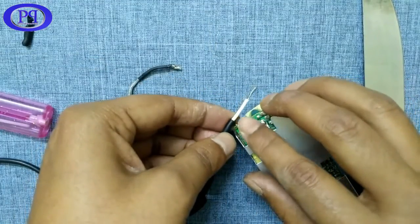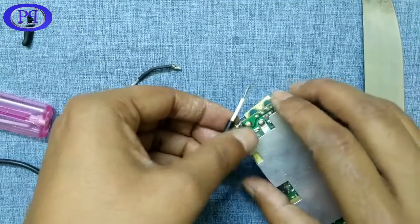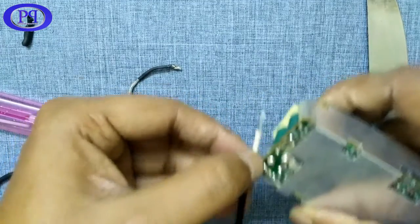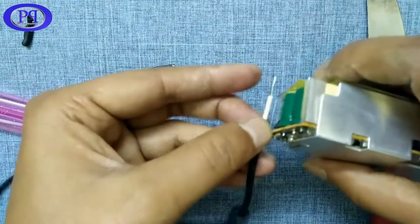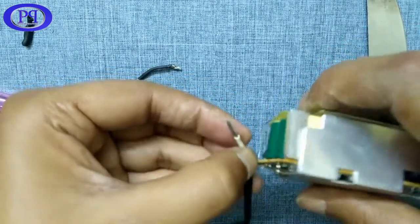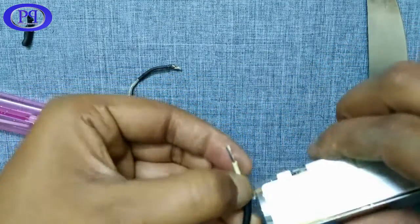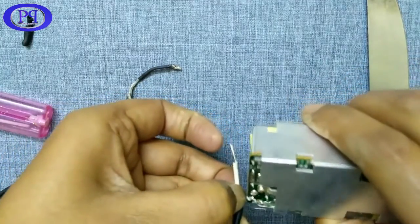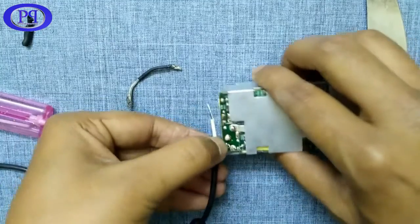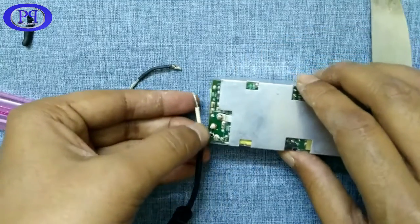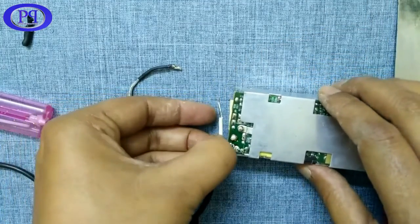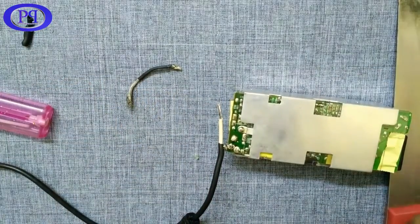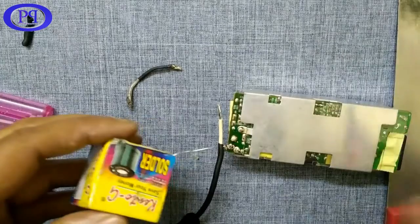I am just twisting the wire to create a tight connection with the PCB. Generally, this doesn't require as we are going to solder these wires. Okay, we are done with this. Now I will solder it out.